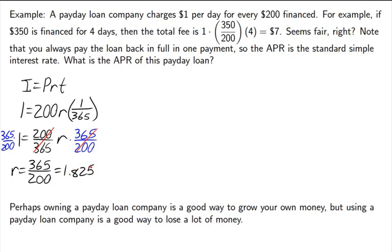That 1.825 doesn't sound bad at all — until you realize it's not a percent, it's a decimal. As a percent, that is a 182.5% interest rate. If you really wanted to make some money, owning a payday loan company might be a good way to do it. But if you're using one, it might seem like you're not paying very much — but you are losing a lot of money.